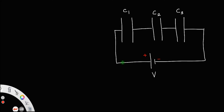So, this positive terminal is connected to this plate, so on this side it becomes positive. Let us draw two units of positive charge. By induction, the other plate of C1 will get negative charge. Similarly, due to this negative charge, the adjacent plate becomes positive, and we get the charge distribution like this.